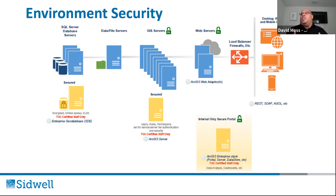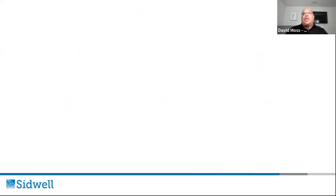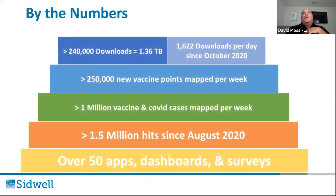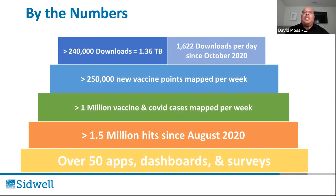By the numbers, as of about a month before I left: we did over 50 apps, dashboards, and surveys. We were getting millions of hits since August — they're definitely over two million now. We were mapping over a million vaccine and COVID case records per week, close to two million now, and over 250,000 new vaccine points mapped per week. Only an enterprise GIS system can produce this amount of data.